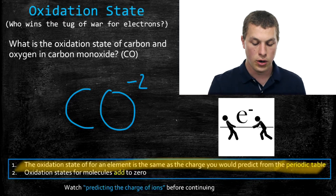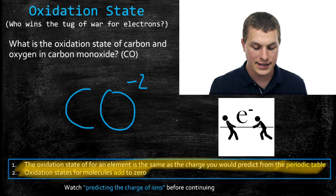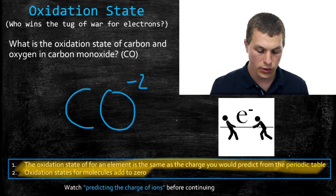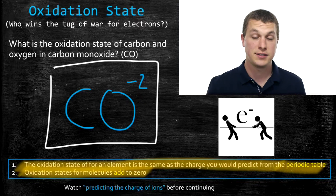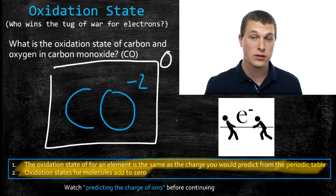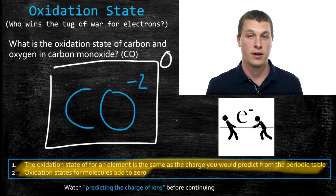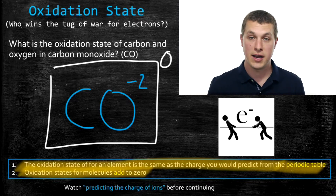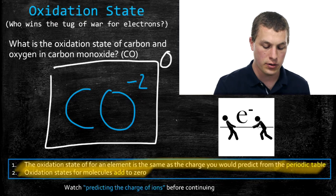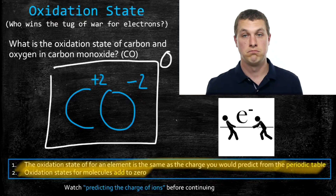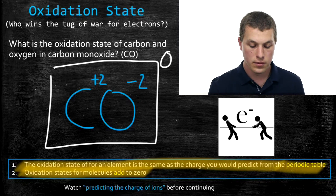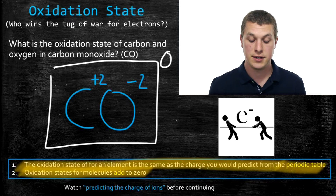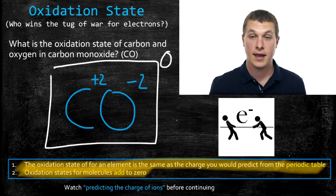The next rule we need is that the oxidation states for a molecule add up to zero. So if we take carbon and oxygen together, the oxidation states have to add up to zero. This looks similar to charge, but remember we're dealing with a covalent compound — it is not charged. It just has an oxidation state describing who's winning the tug of war for electrons. If oxygen is minus two and everything must add to zero, then carbon has to be plus two, because plus two minus two gives us zero. So the oxidation state of carbon is plus two, and the oxidation state of oxygen is minus two.